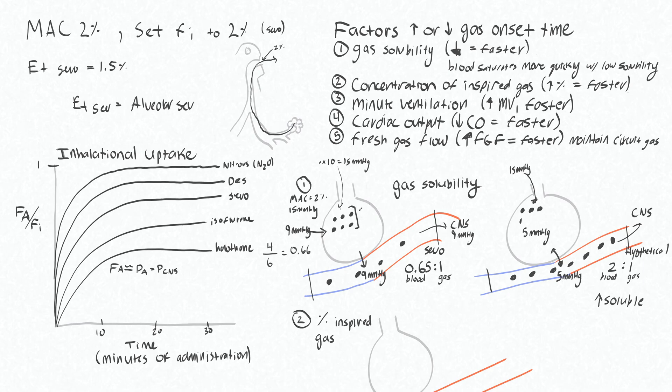By the way, your fraction of alveolar gas here is only 0.6 of what you inspired. So your FA over FI is 0.6 here. And here, your fraction of alveolar gas compared to what you have inspired is 0.33. And that is exactly what our inhalational uptake graph is showing. Where there's a point where the SIVO is going to be 0.6 and your halothane will be 0.3-ish. Don't mind my inaccurate y-axis here. The blood gas partition coefficient of SIVO being 0.65 to 1. And for halothane is actually 2.5 to 1, which is even a little bit more soluble than I showed you in our example.